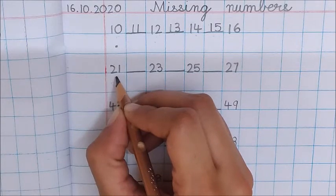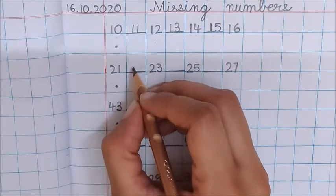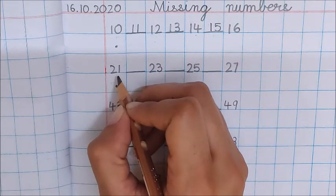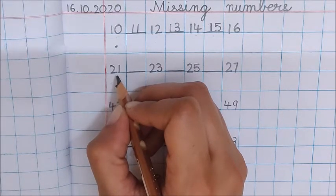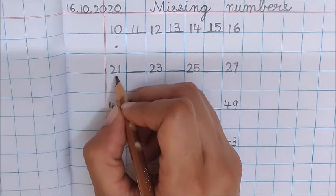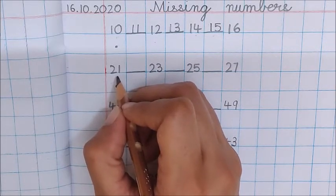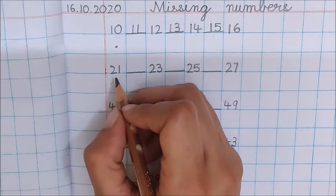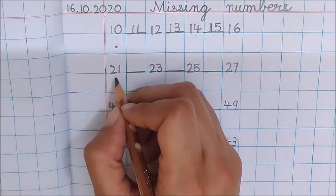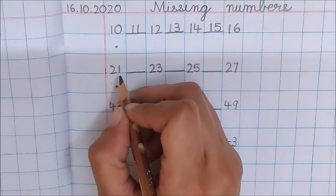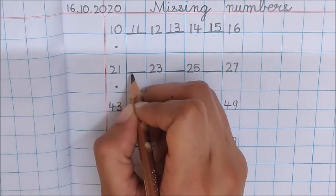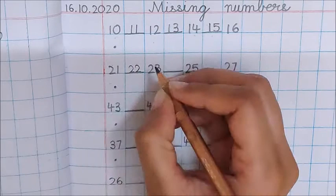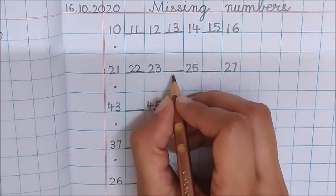What is the first number here children? 21. What comes after 21? You don't know? Then count till 21 and you will find the answer. Start from 1 and stop at number 21. 1, 2, 3, 4, 5, 6, 7, 8, 9, 10, 11, 12, 13, 14, 15, 16, 17, 18, 19, 20, 21. What comes after 21 children? 22. So write here 22.